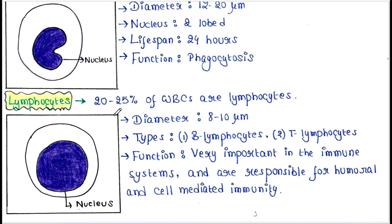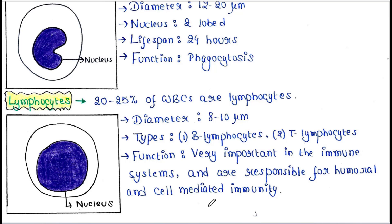20 to 25 percent of WBCs are lymphocytes. Diameter 8 to 10 micrometers. They are of two types: B lymphocytes and T lymphocytes. Function: they are very important in the immune system and are responsible for humoral and cell-mediated immunity. B lymphocytes secrete antibodies and are responsible for humoral immunity, while T lymphocytes are responsible for cell-mediated immunity.